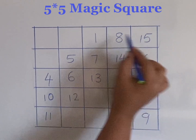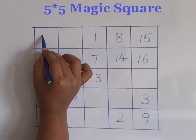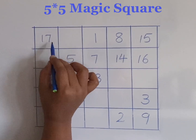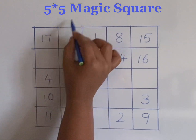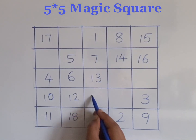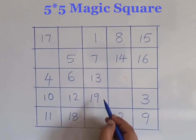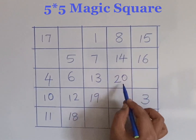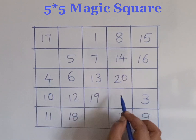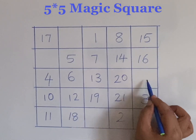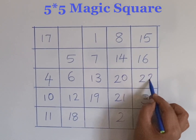From here no diagonal cell is vacant and no columns further, so come to the leftmost cell of the upper row and fill number seventeen. From here no diagonal cell is vacant but the next column is there, so fill the bottom cell with number eighteen. Again going diagonally with number nineteen and then twenty, but the next diagonal cell has already been filled, so come to the cell below and fill number twenty-one, and again diagonally number twenty-two.